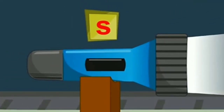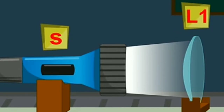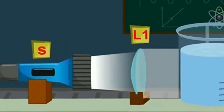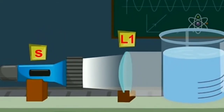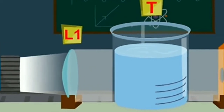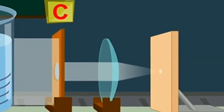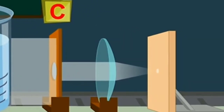The light source is a torch. It passes light through a lens, then through the solution — which is pure water at this stage — then through a hole and another lens, and finally it reaches the screen.